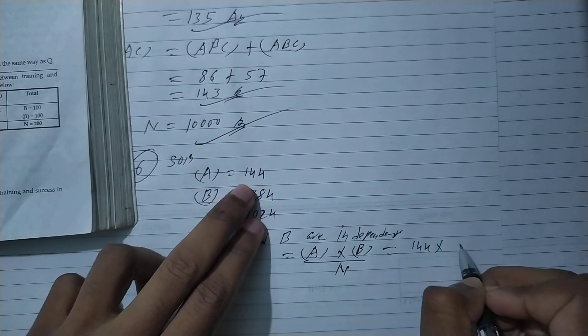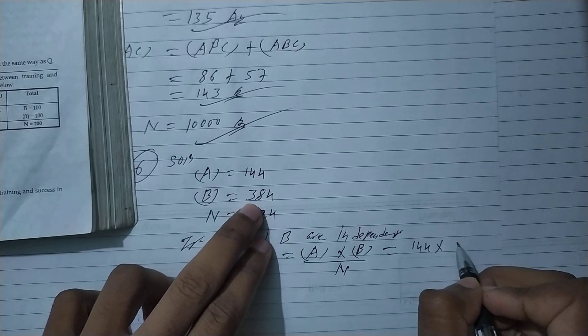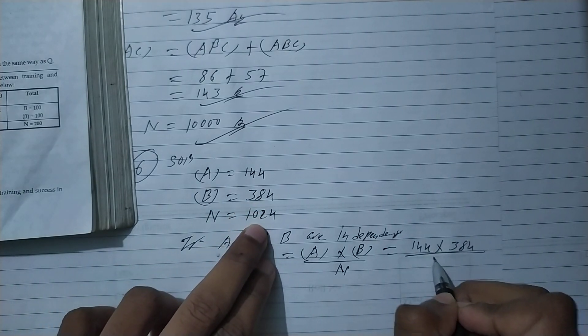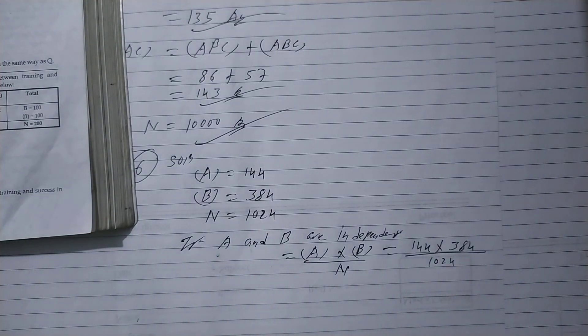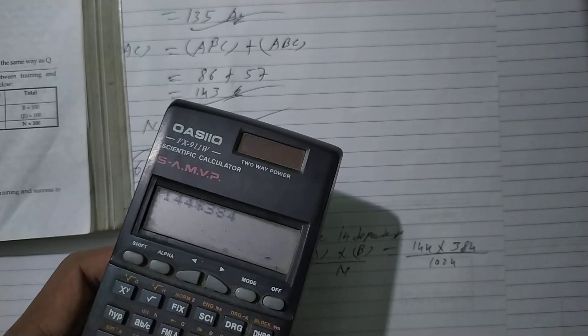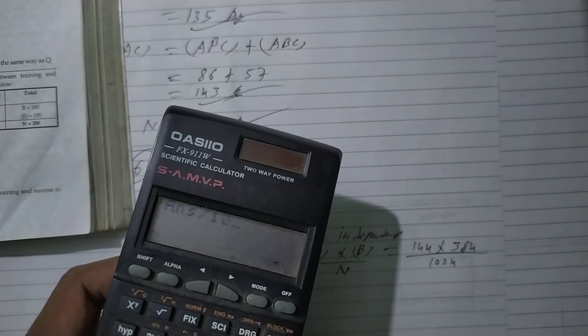Solving: 144 into B, 384 by N which is 1024. So, 144 into 384 by 1024.